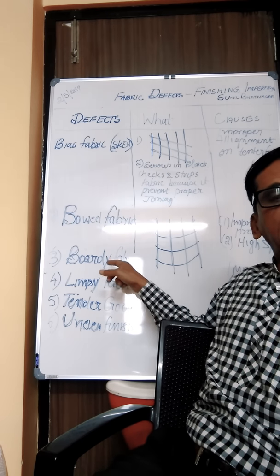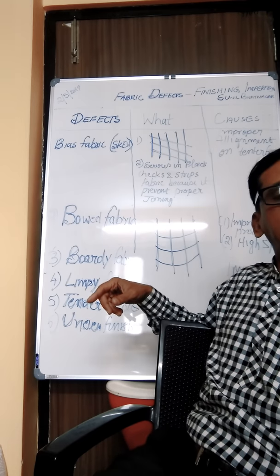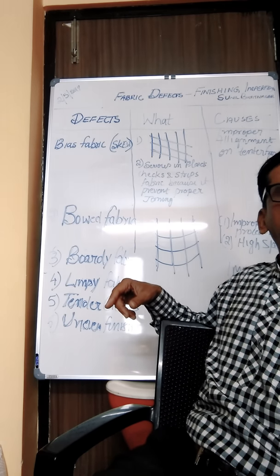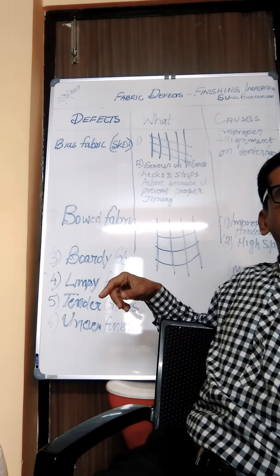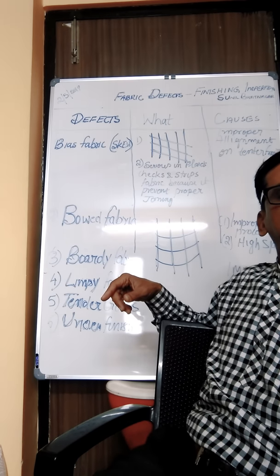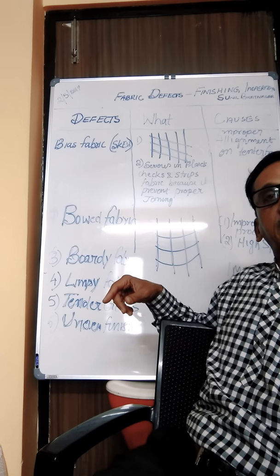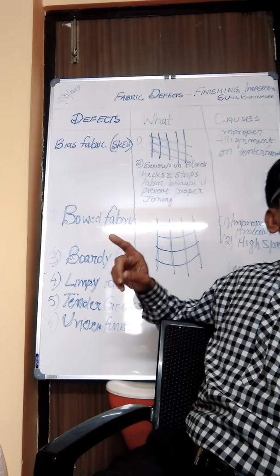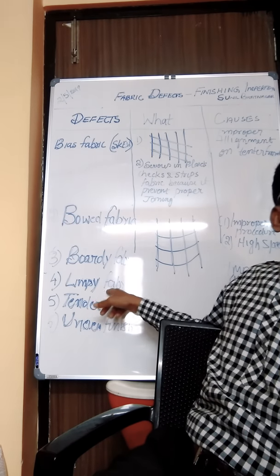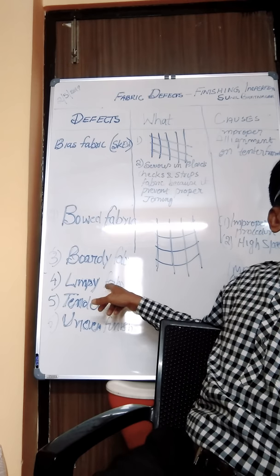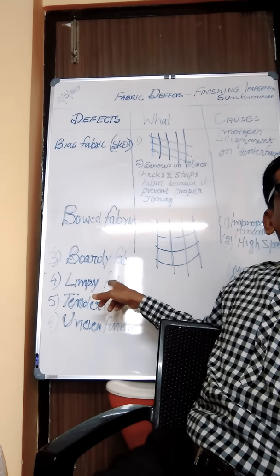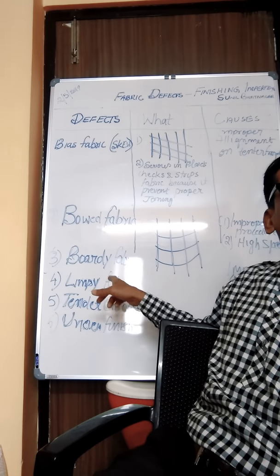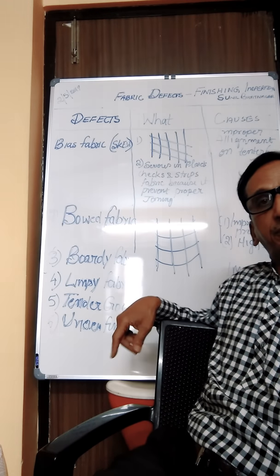Then there is limp fabric. As the name implies, a limp fabric is too soft and without body as compared to the standard and reference sample. This finishing imperfection may result from inadequate amounts or improper application of chemical finishing agents. This condition is sometimes called a sleazy finish.